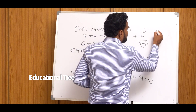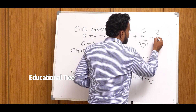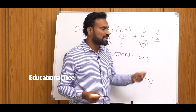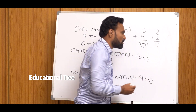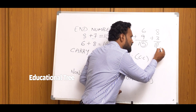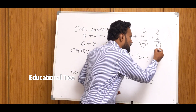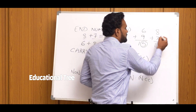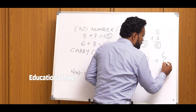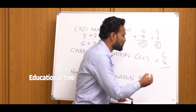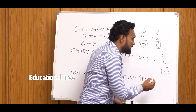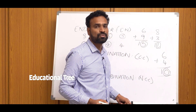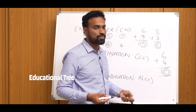Suppose 8 plus 3. The sum of 8 and 3 is 11. The unit place is 1, so the End Number of 8 and 3 is 1. Next, 6 plus 4. The sum of 6 and 4 is 10. The unit place is 0, so 0 is the End Number of 6 and 4.